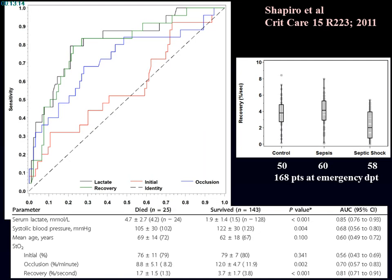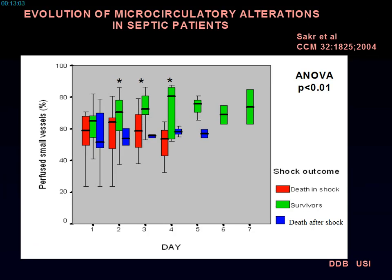When patients have been at least a little resuscitated, microcirculation is a very clear indicator of survival, rather than blood pressure which is so commonly used. Even more importantly, there is an increase in risk of death as the severity of microcirculatory impairment increases. So it is very important to improve this microcirculation.